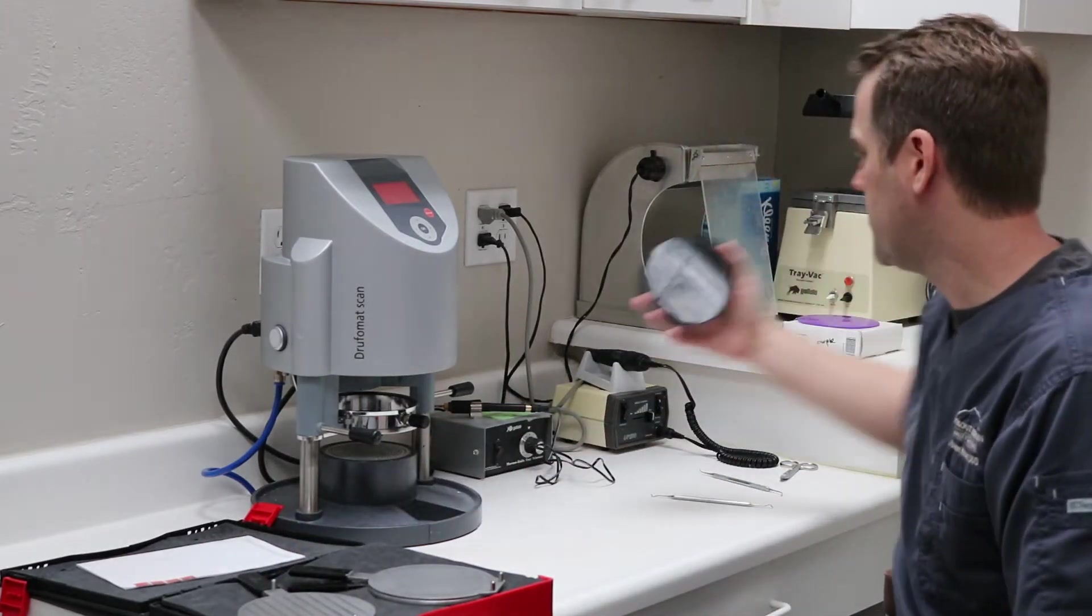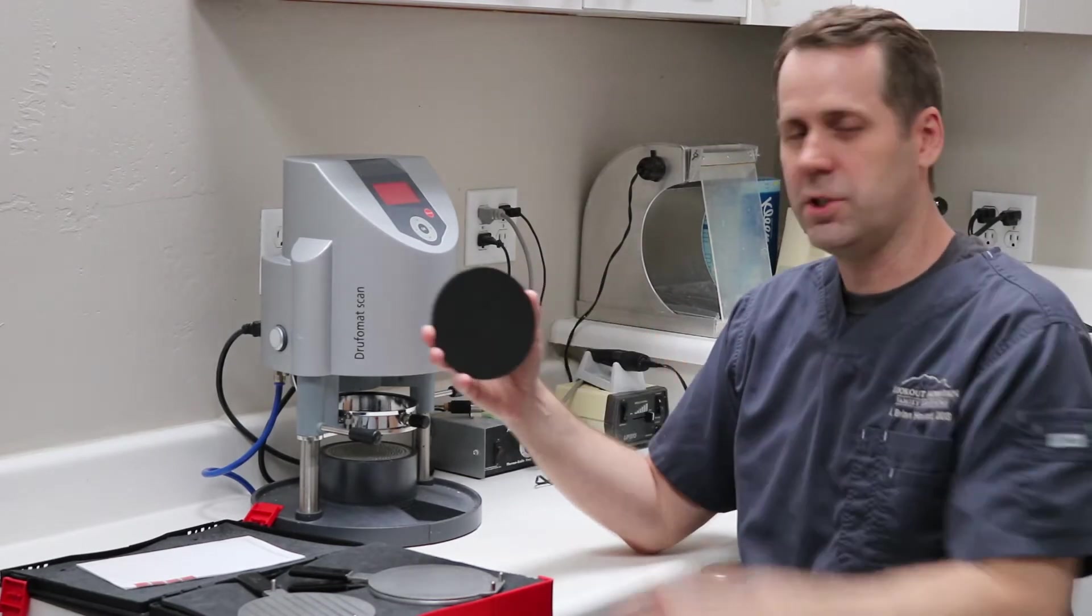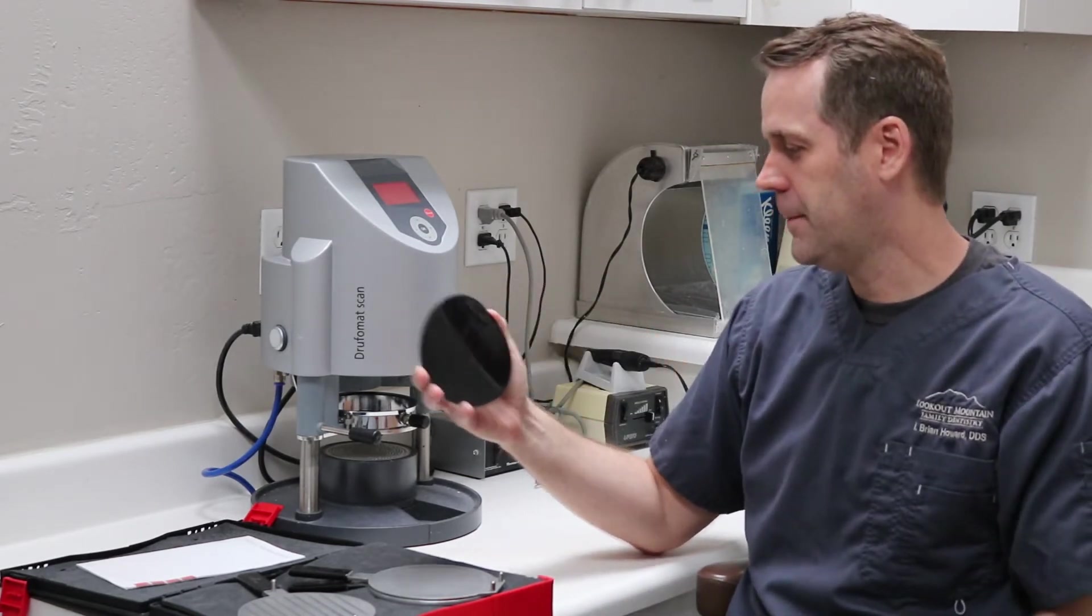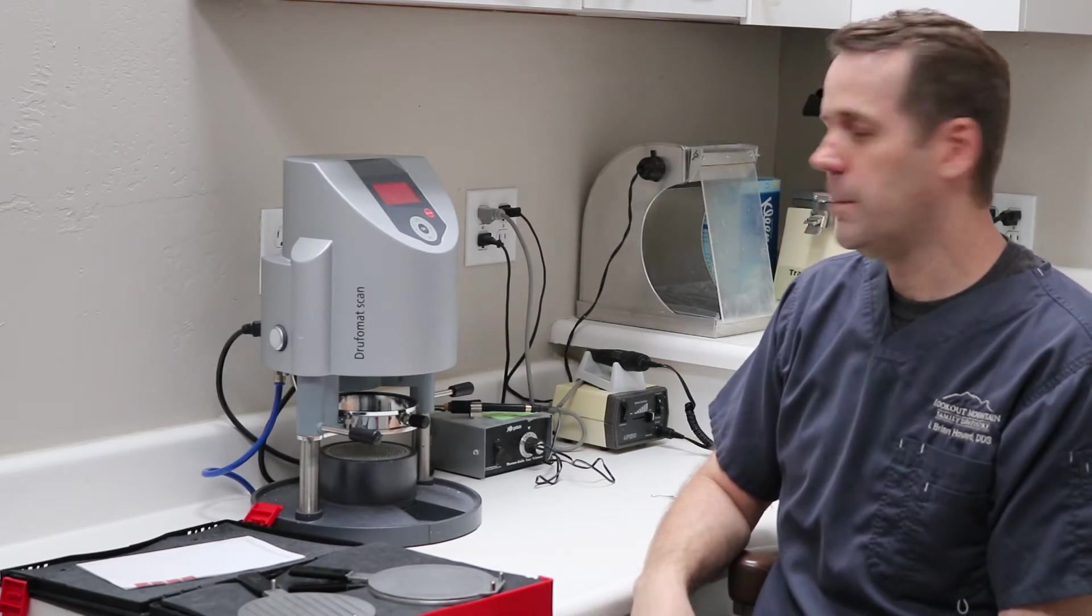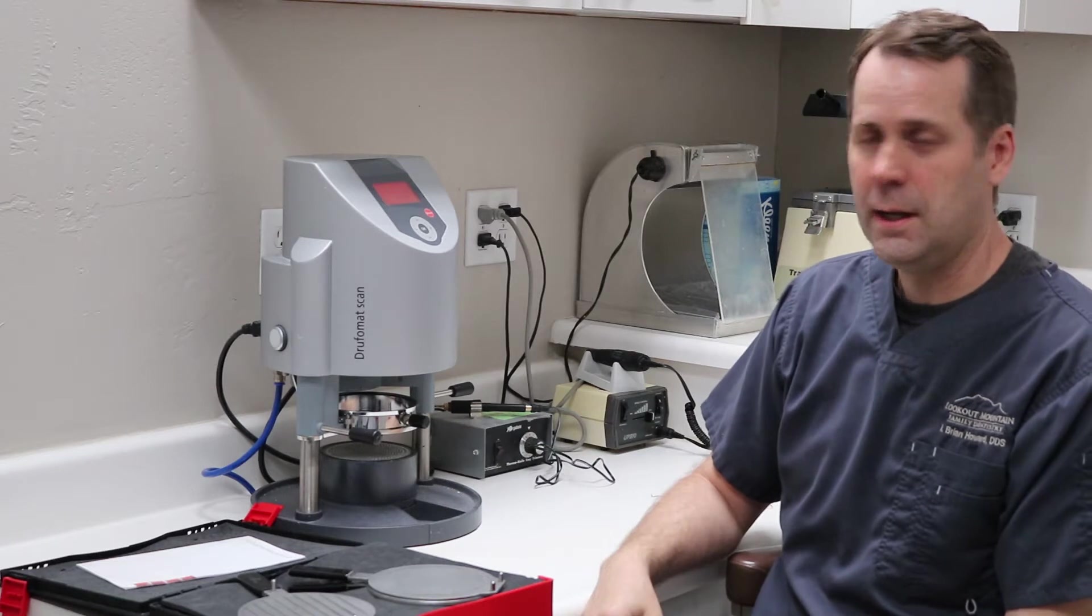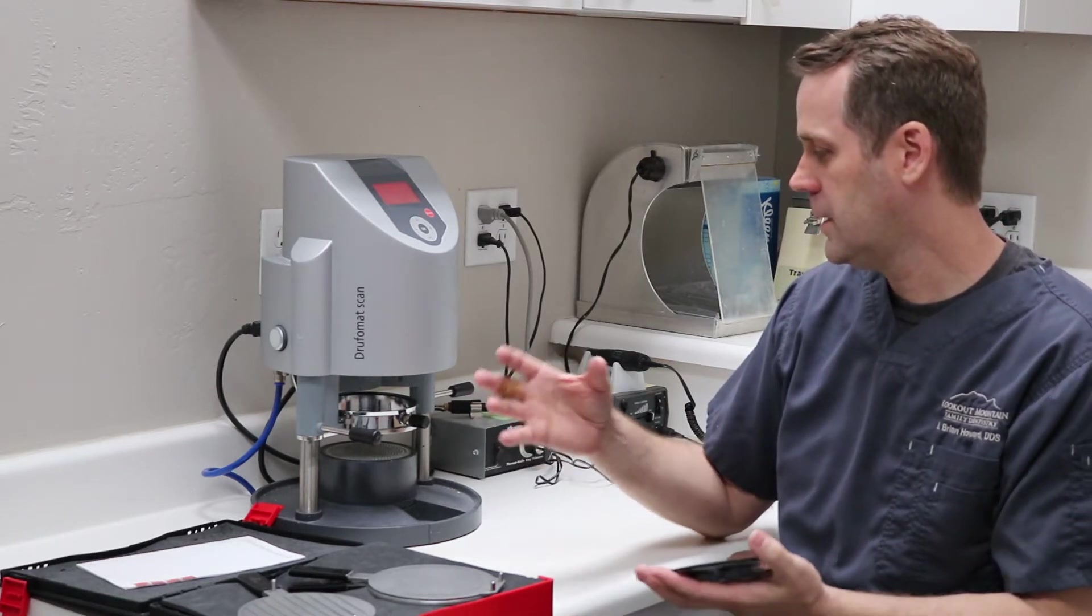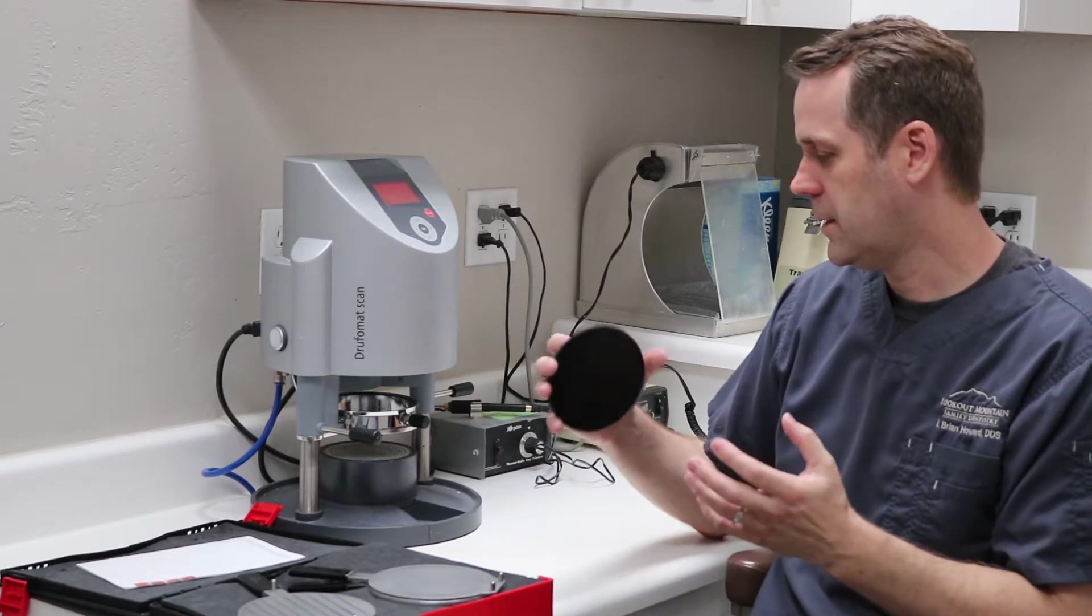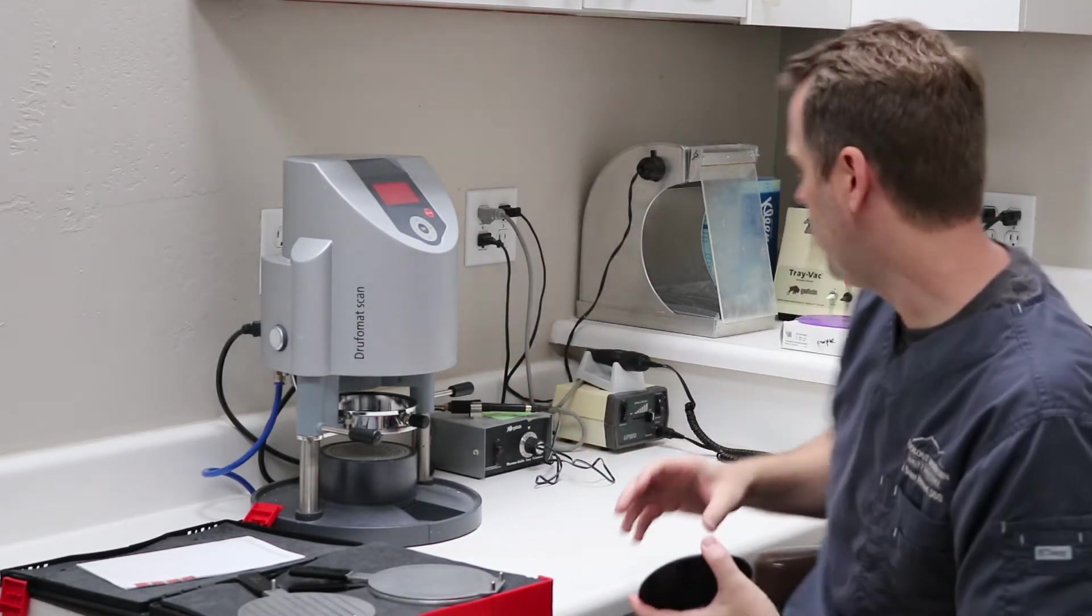We've got the plastic that comes in a little plank like this. It can be circle, round, it could be a square sheet, it doesn't matter. This machine, the Druffomat scan, is from Dentsply. You hook it up to your compressor and it's a pressurized heating machine that will form these planks over the cast, the models that you have.